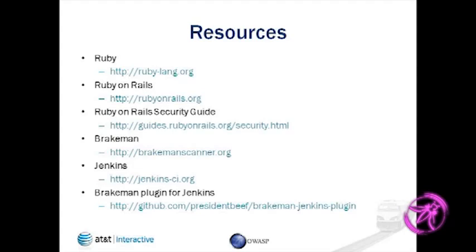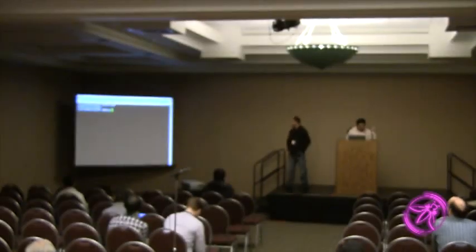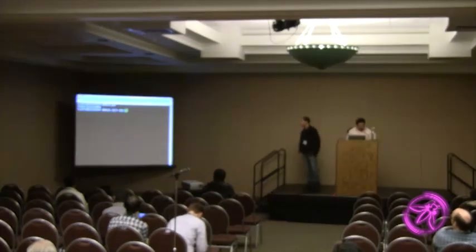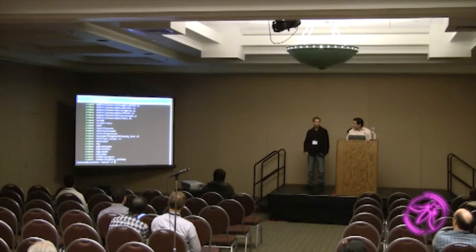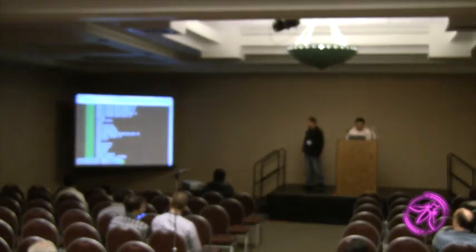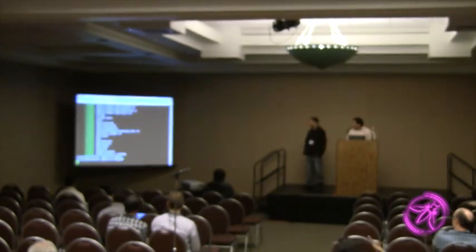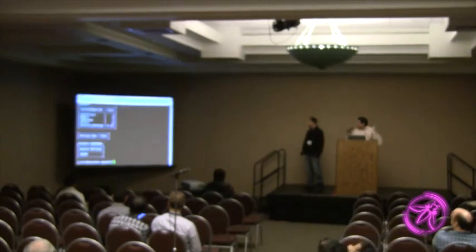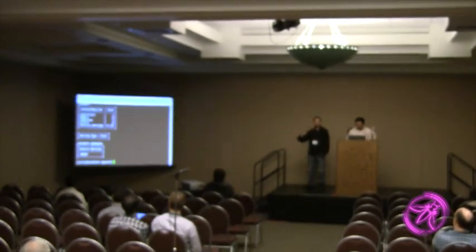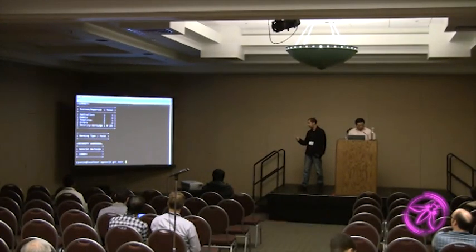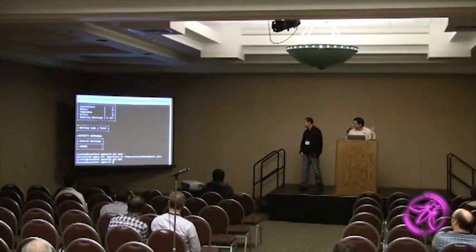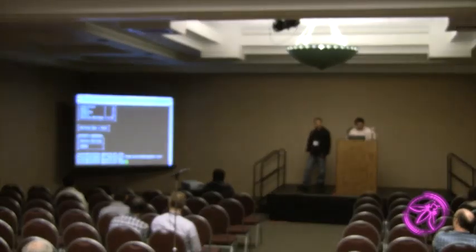I'm going to talk and Tim is going to type. The first thing we're going to do is create a new Rails application. This is using Rails 3.0.9 or something like that. If we just run Brakeman, you can see it notices it's Rails 3 — this is the output you'll get, and it didn't find anything. If this was a Rails 2 application, you'd get at least one warning — the default routes warning — but they disabled that in Rails 3. Now we're going to turn this into a Git repo so we can use it with Jenkins.